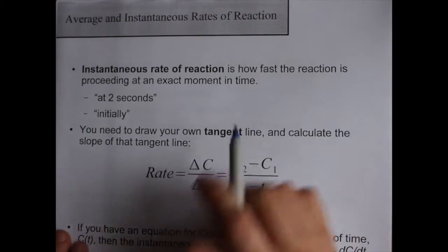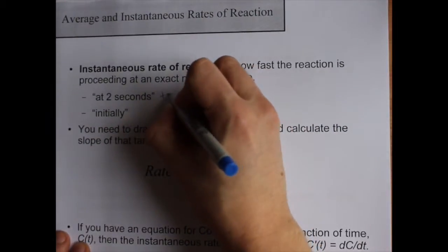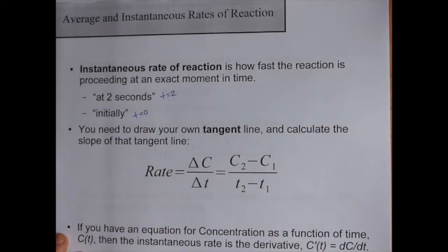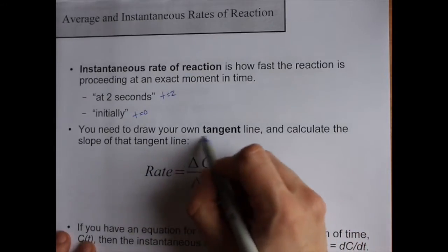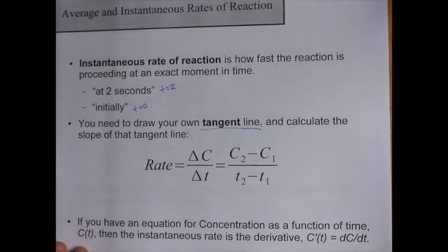Instantaneous rate of reaction is how fast the reaction is going at an exact moment, like at T equals 2 only, or at T equals 0 only. It's the same formula, but you're using two points on the line, not on the curve of the actual data that you use.